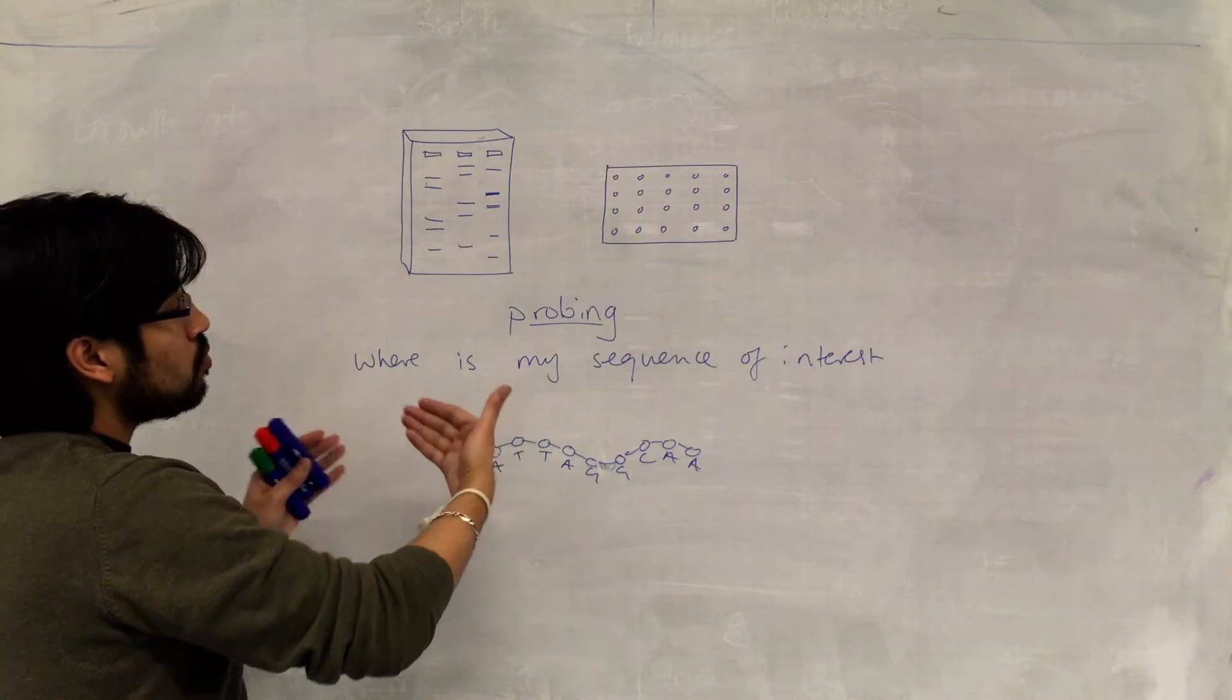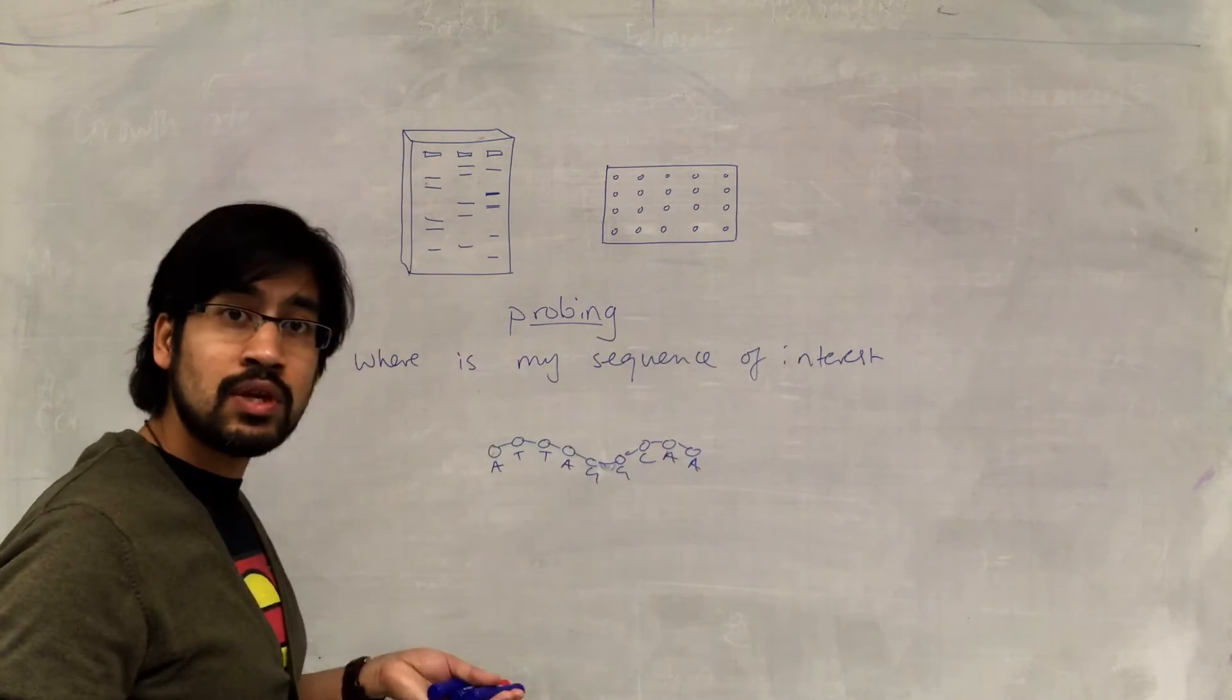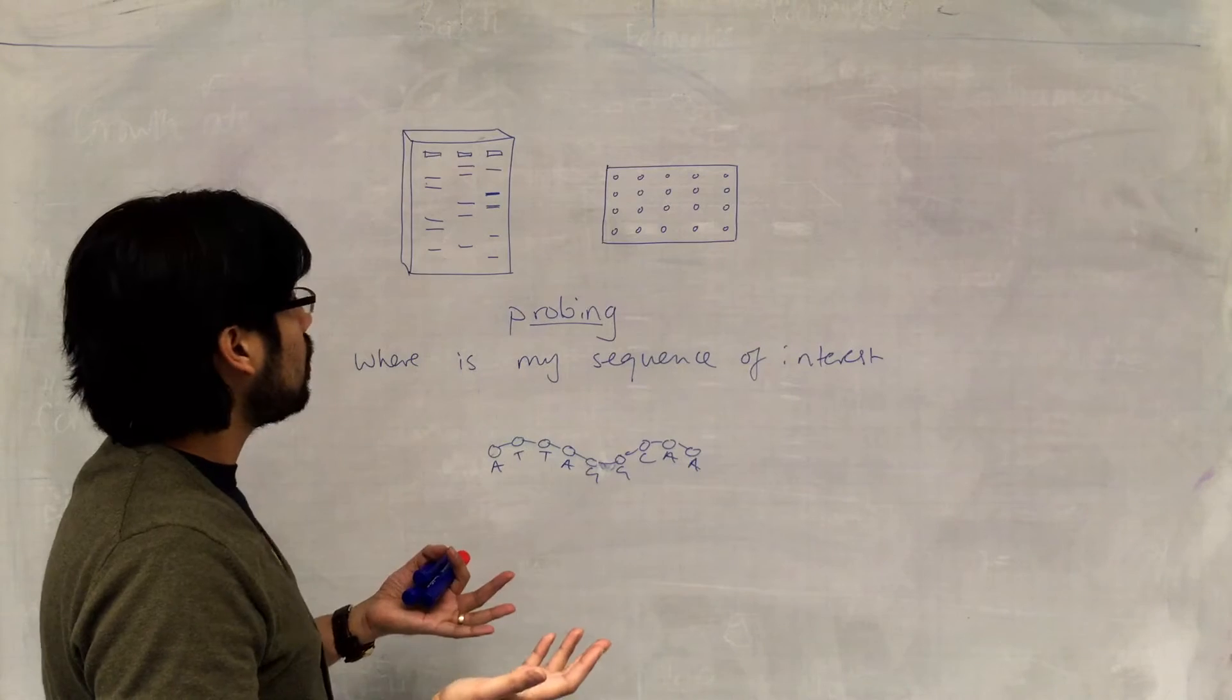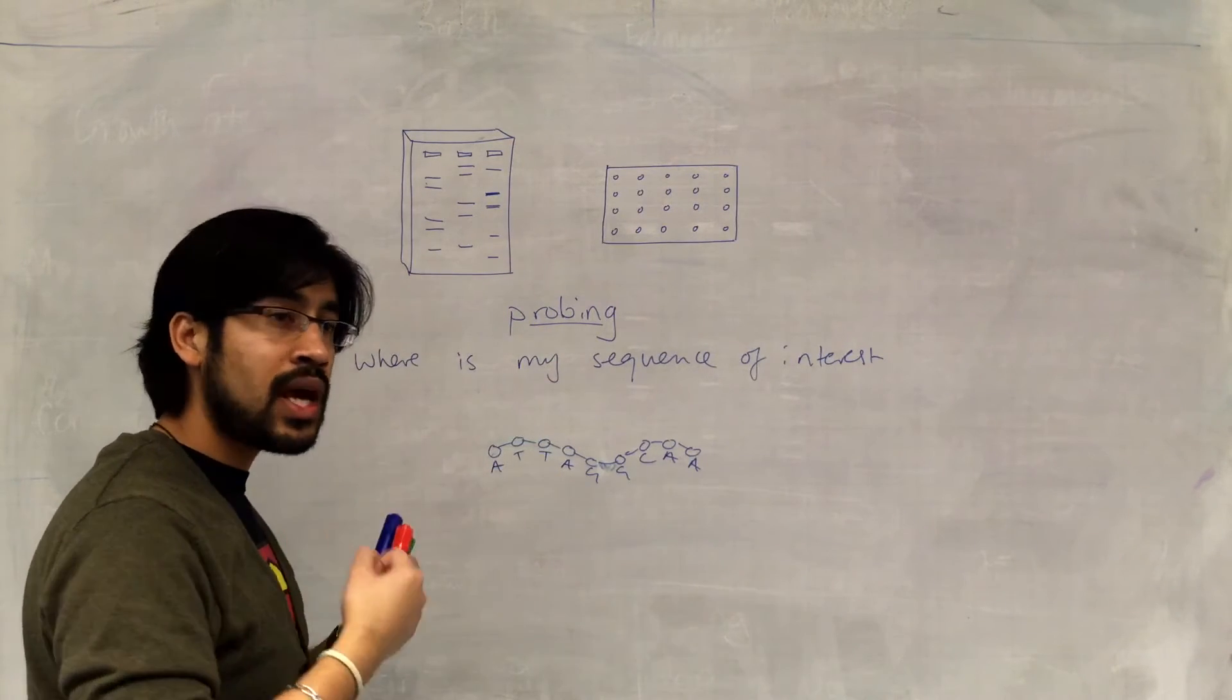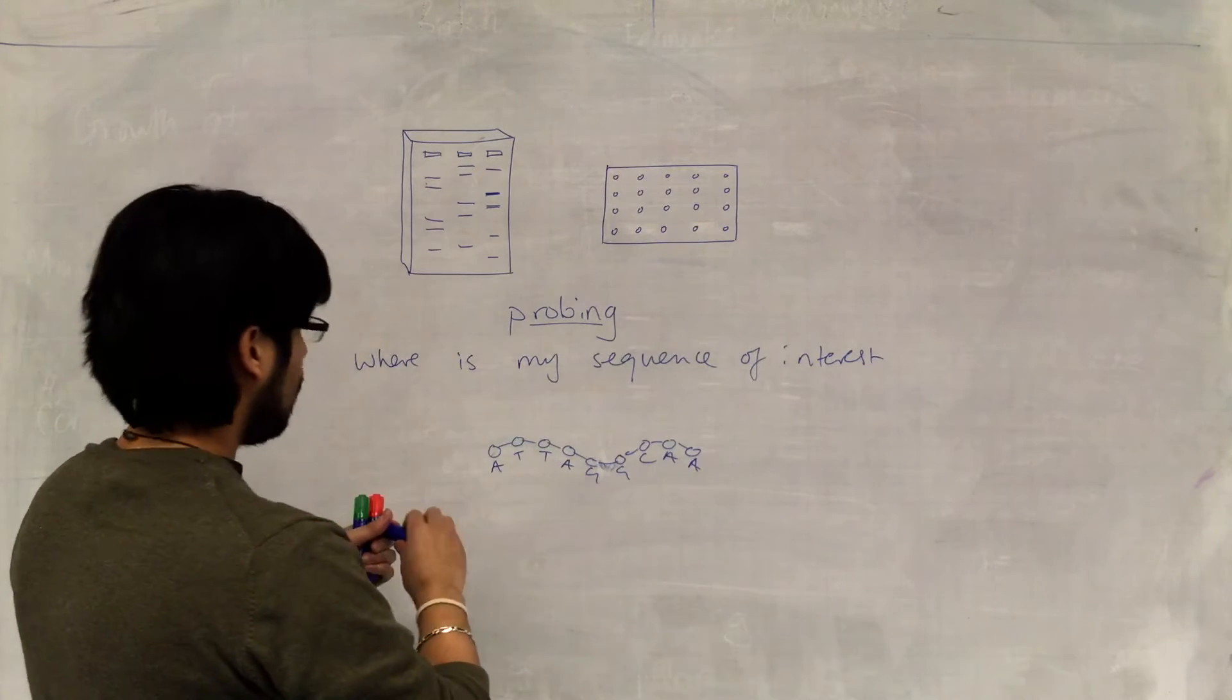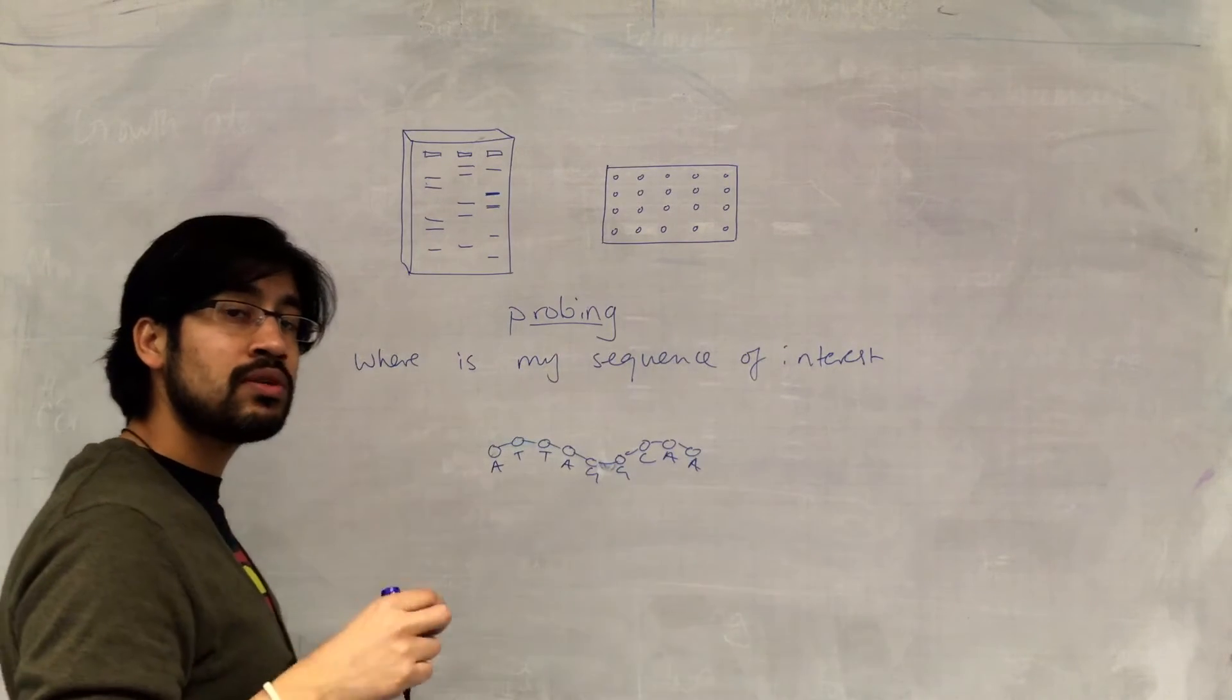And what would happen is, in most cases, this probe wouldn't find its complementary sequence. So it would just randomly bind at very low levels, or probably not bind anywhere. But where it finds its complementary sequence, it will attach. And it will attach in a much higher concentration than in other places. So the probe would bind to the sequence of interest by complementary base pairing, and its concentration would be high there.